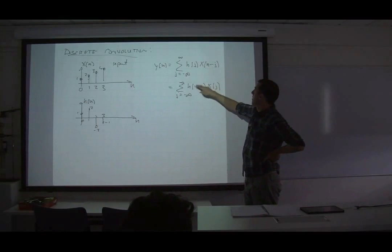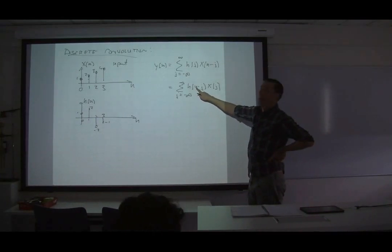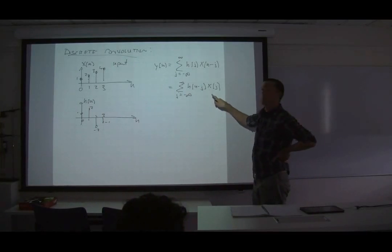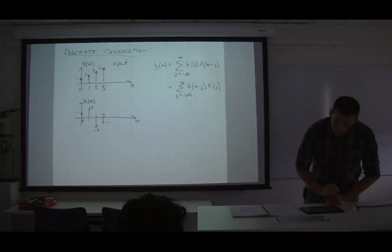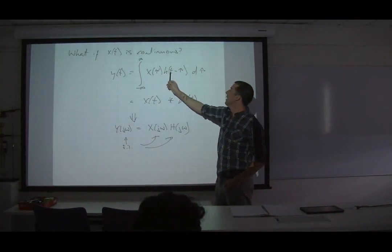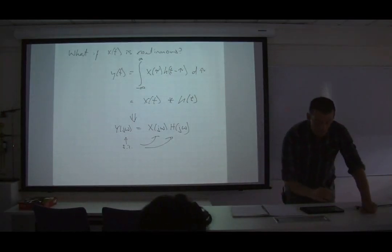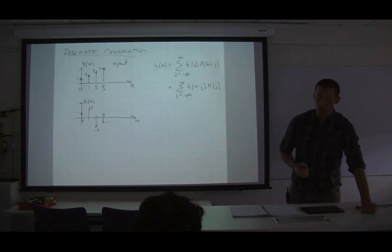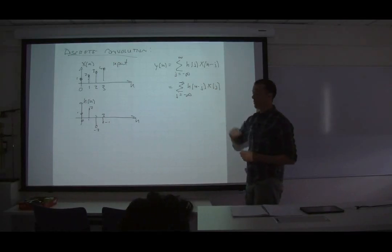You can show with a change of variable that the infinite sum is equivalent to the other form. This looks like where we have the impulse response at N minus tau, multiplied by the input signal — which is exactly what the continuous time version described. The discrete convolution looks almost exactly the same, except we only have values at the sampled points in time.